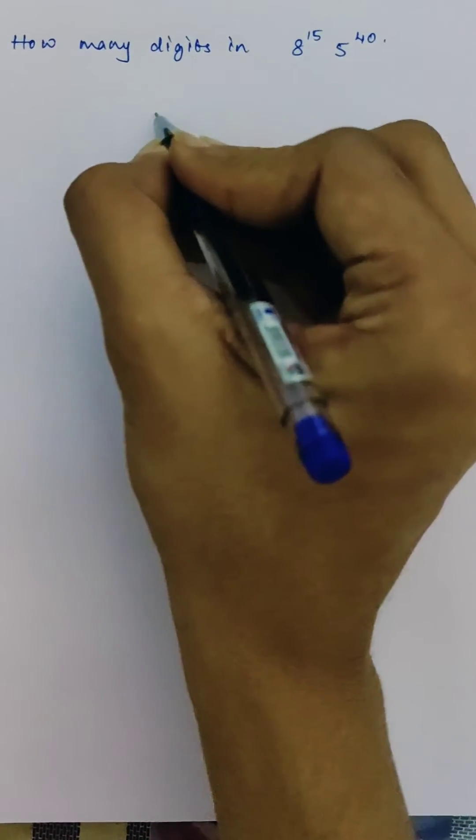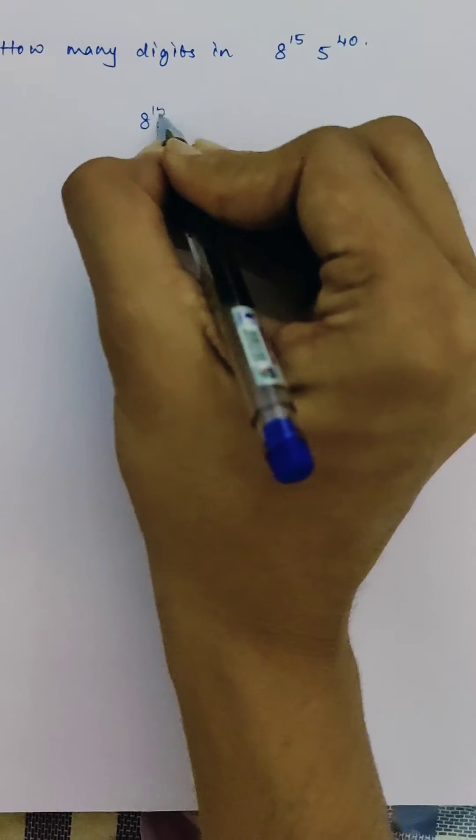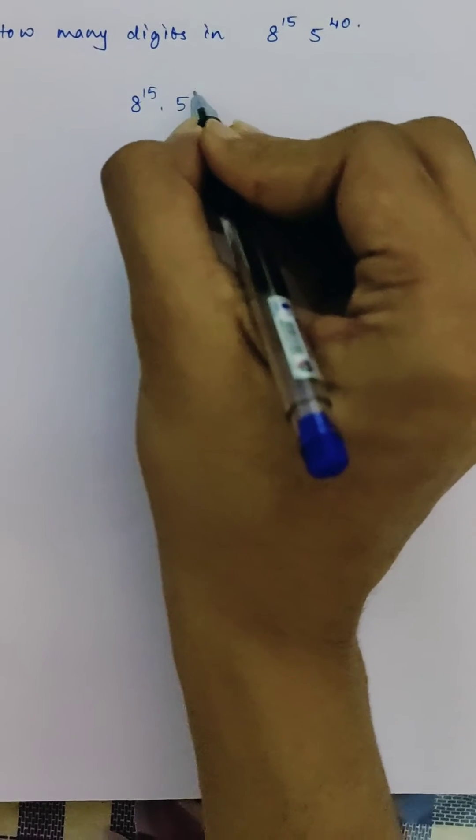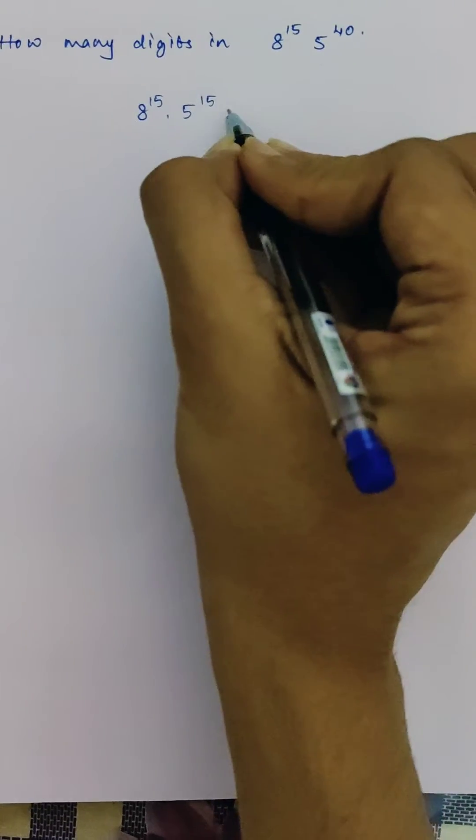Let us find out the number of digits in 8 power 15 into 5 power 40. So let's write 8 power 15 into 5 power 15 into 5 power 25.